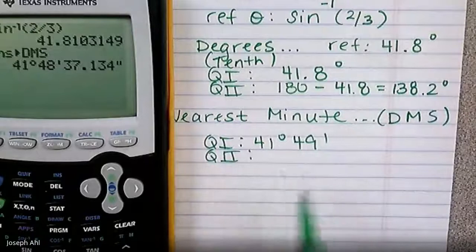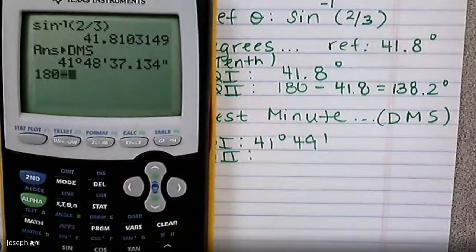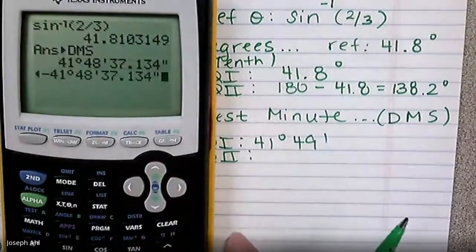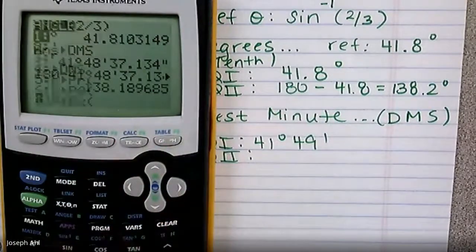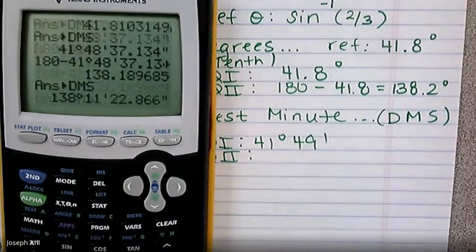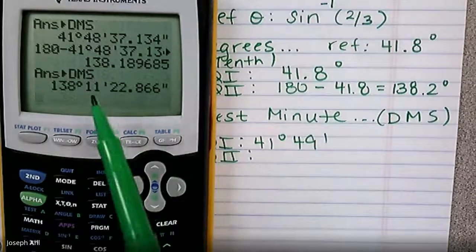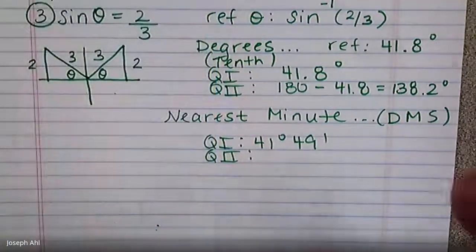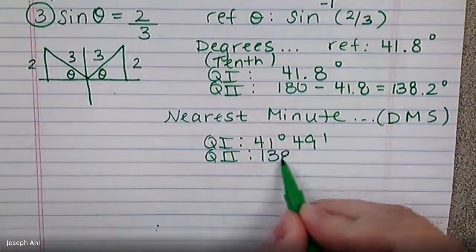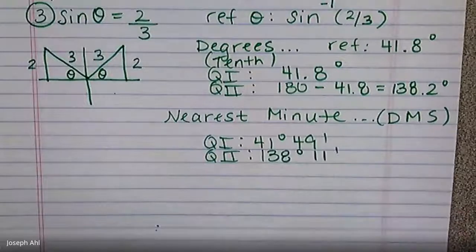To get quadrant two, I still do 180 minus. 180 minus this answer is 138.18, just like we saw earlier. Second apps, convert that to degrees, minutes, seconds. And that's 138 degrees, 11 minutes, and 23-ish seconds. That's not larger than 30 seconds, so the other answer is 138 degrees and 11 minutes.